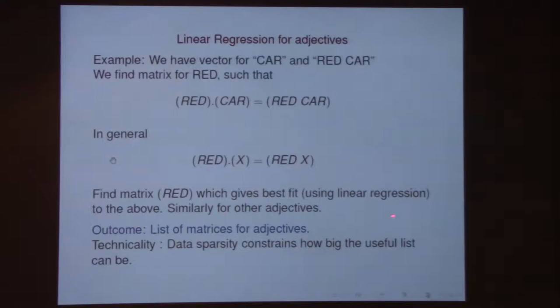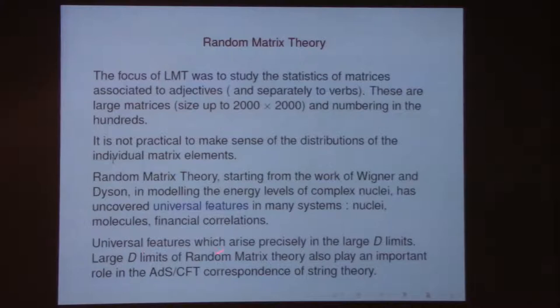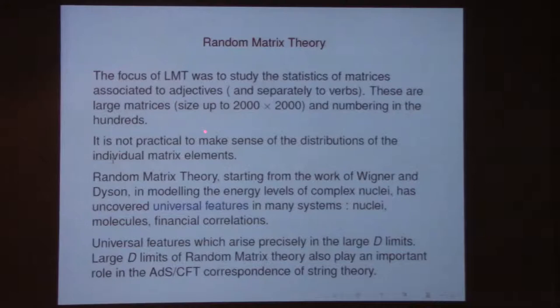Similarly you go through different adjectives and build matrices for them. The outcome is a list of matrices for adjectives. The size of the matrices is related to the number of context words, and you can do different setups where the size can be up to 2,000. The number of adjectives we were looking at was a few hundreds. These computational linguists know what is a reasonable number to choose for this data.